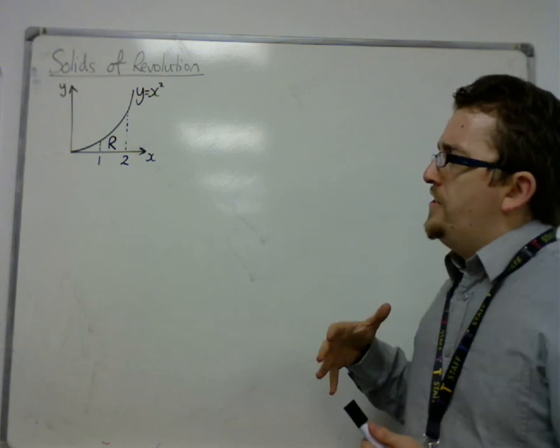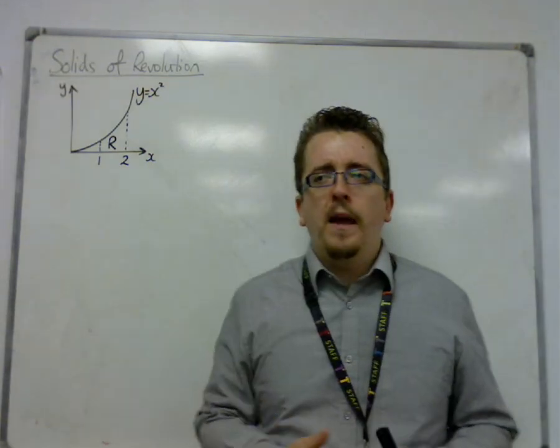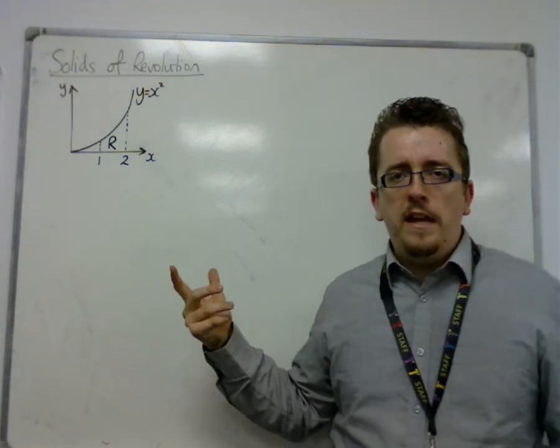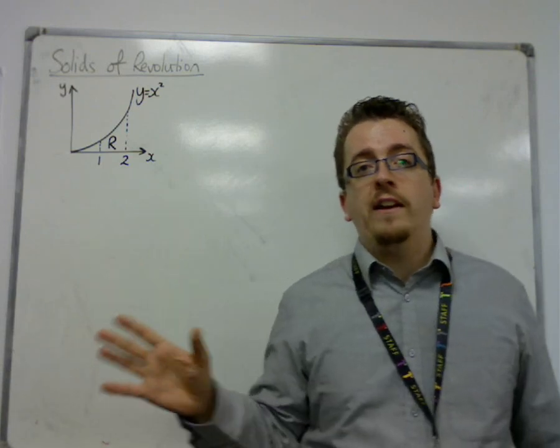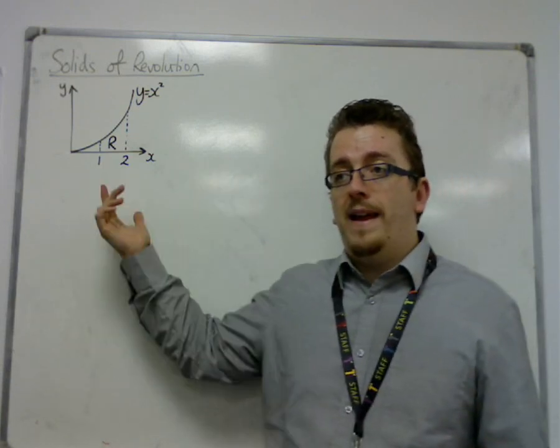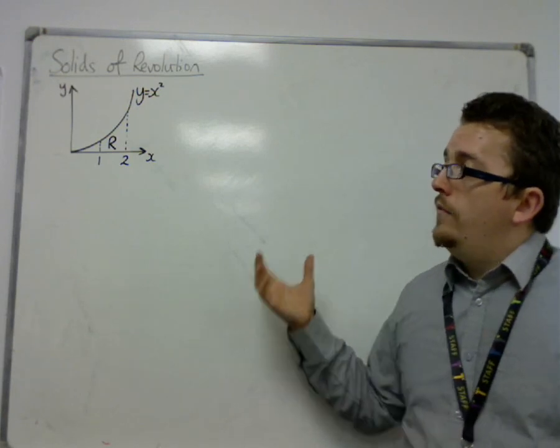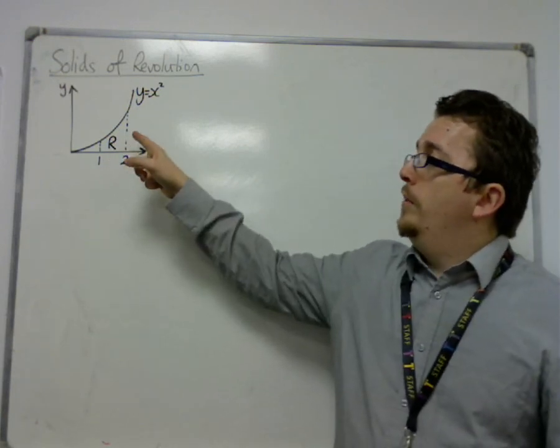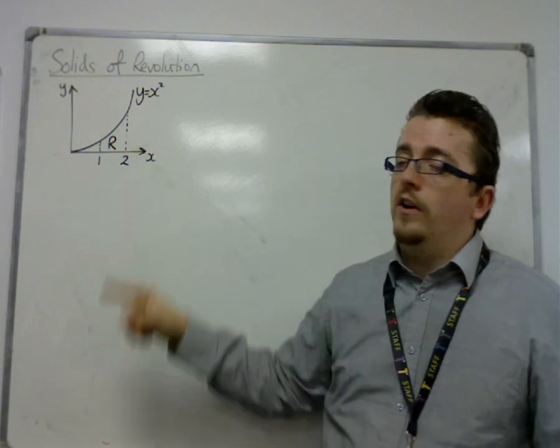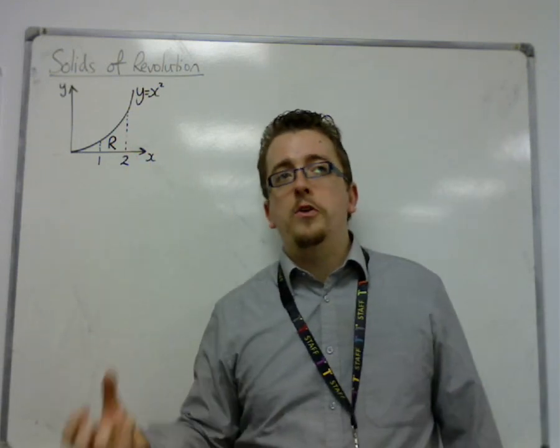So, my first example is going to be pretty basic. What we have here is a graph of y = x² in the positive x-axis. And I've labelled a region between the curve and the x-axis as R, between x = 1 and x = 2.